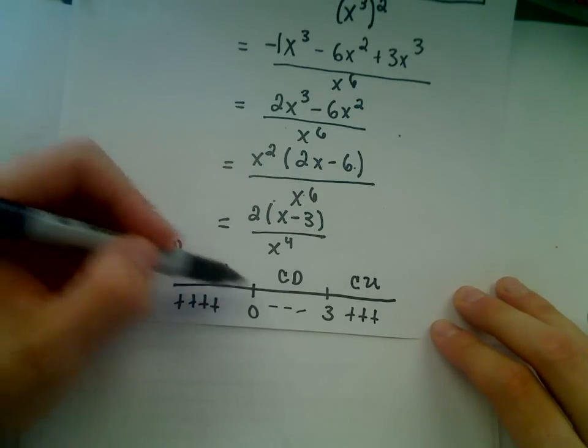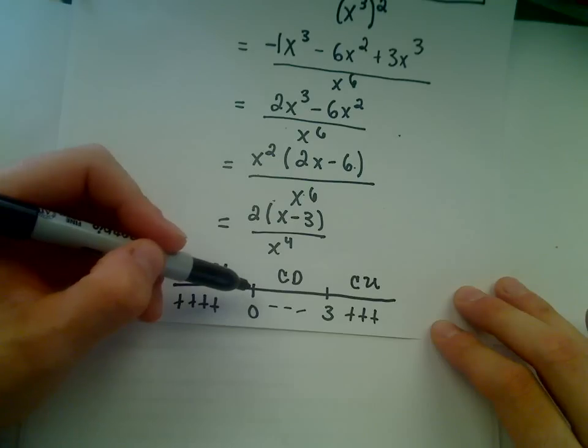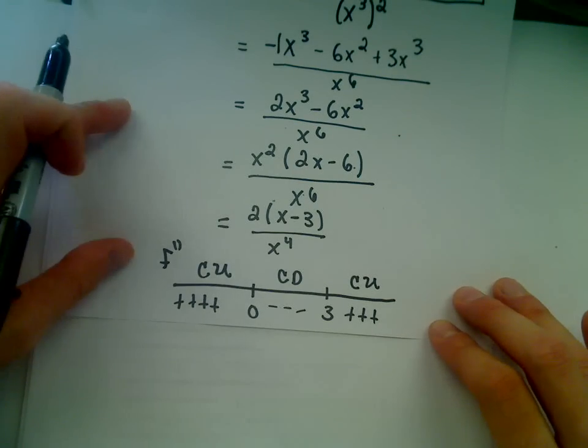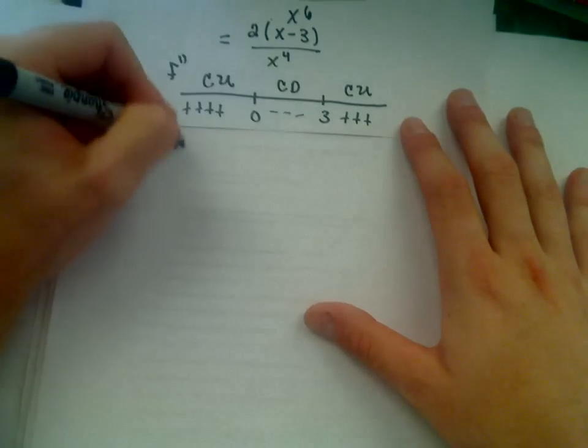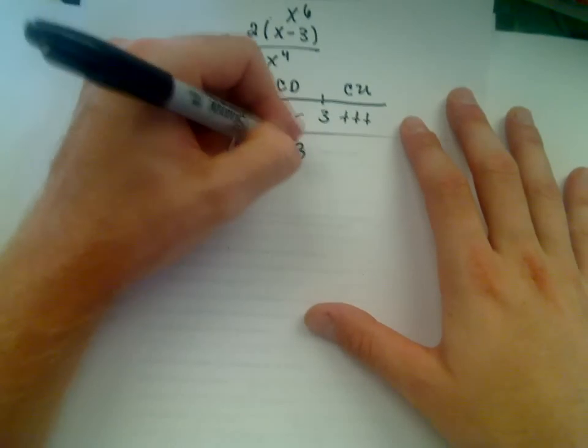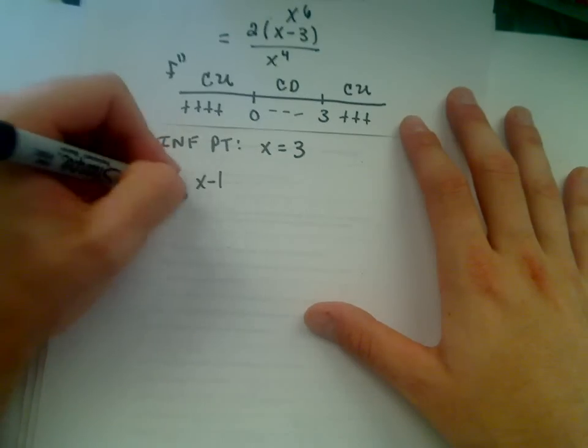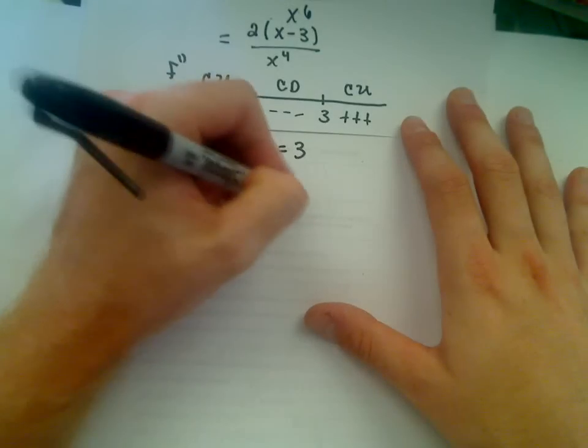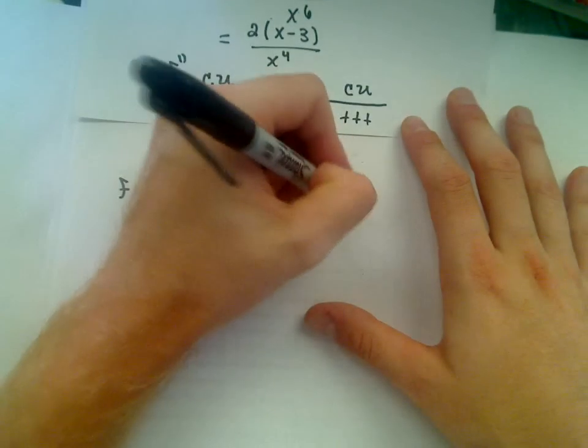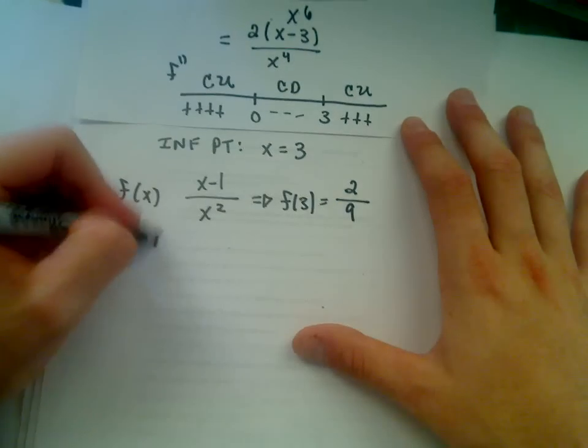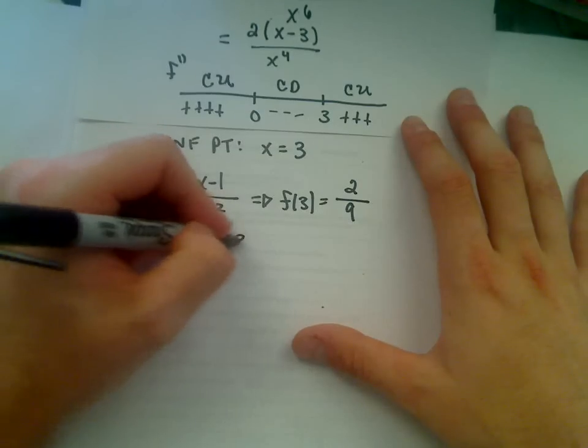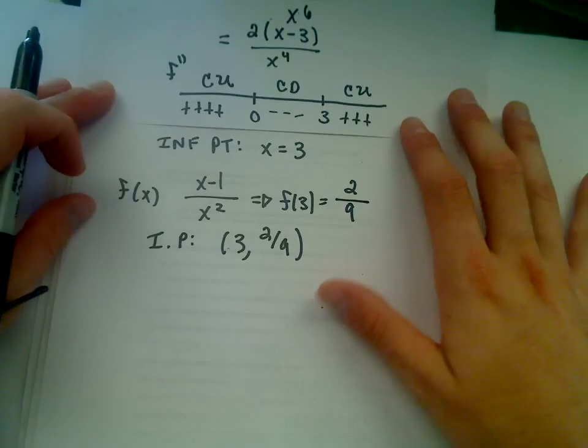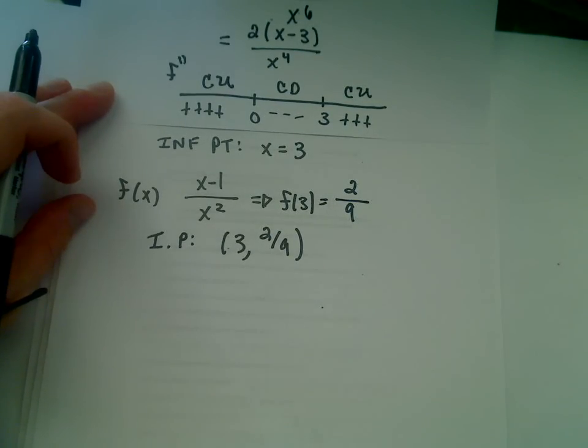Well, again, it looks like it changes concavity at 0, but you have to remind yourself that 0 is not even a point. The function is undefined at 0, so that cannot be an inflection point. So let's see. So the inflection point corresponds to the x coordinate of 3. And again, if you think about the original function, x minus 1 over x squared, if you plug 3 in, what are we going to get out? It looks like 2 over 9. So it says our only inflection point will be at the point 3 comma 2 ninths. And now I think we have just about everything we need to sketch a nice little graph here.